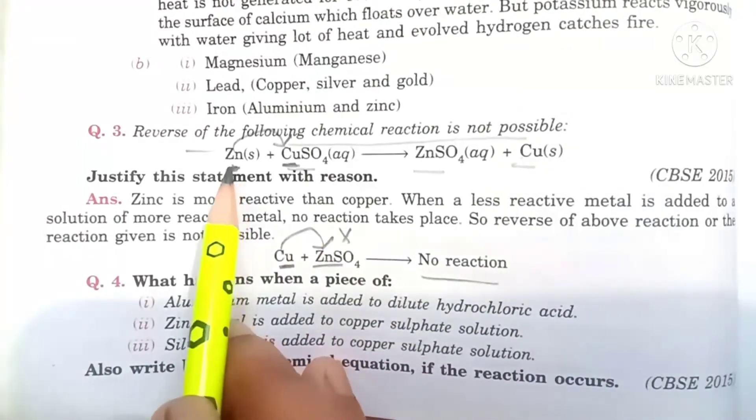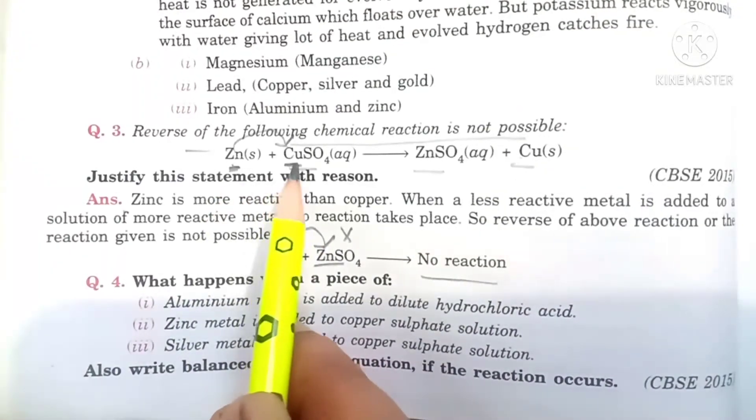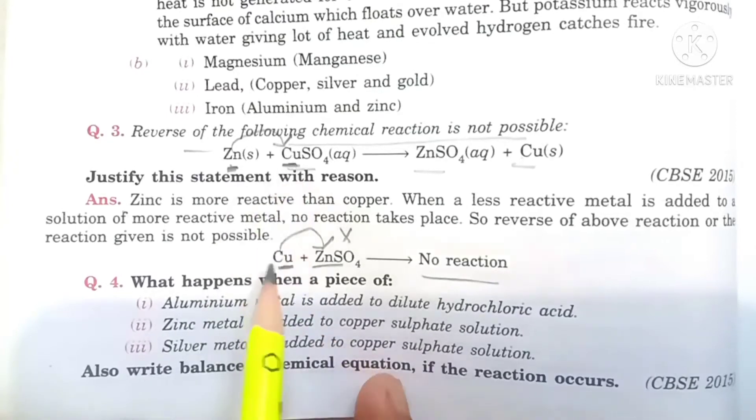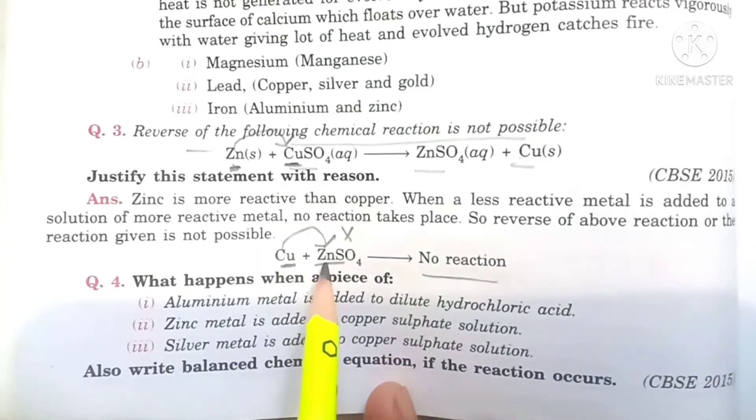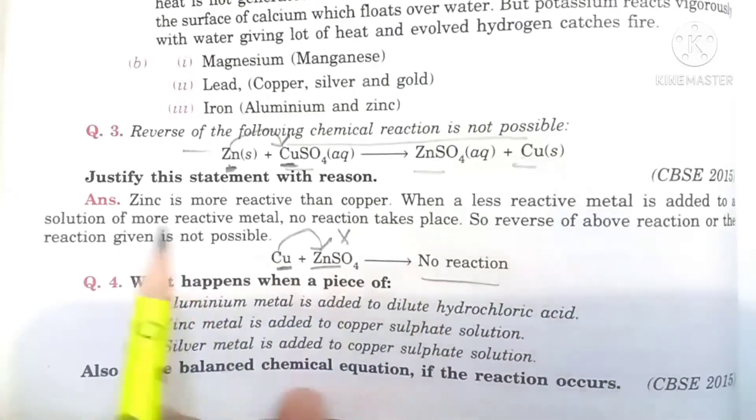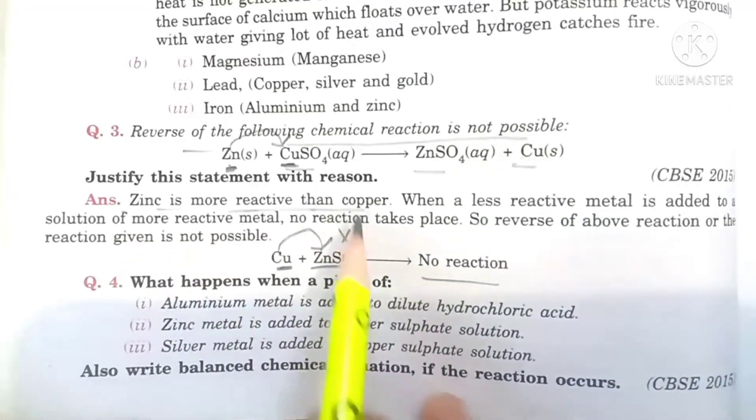You have to keep in mind that more active metal will displace less active metal, not that less active metal will displace more active metal. So this reaction is not possible. Zinc is more reactive than copper.